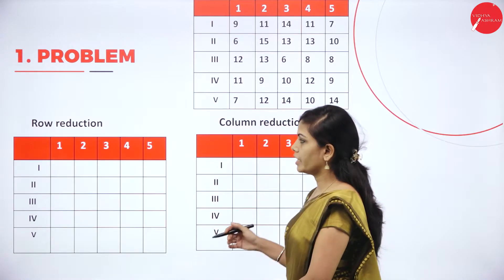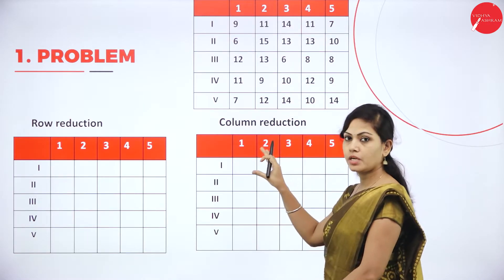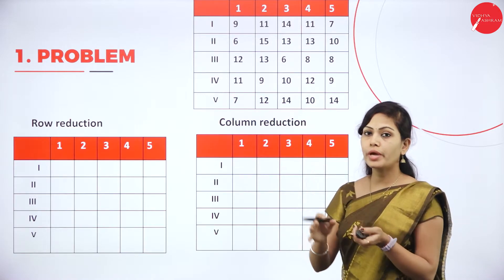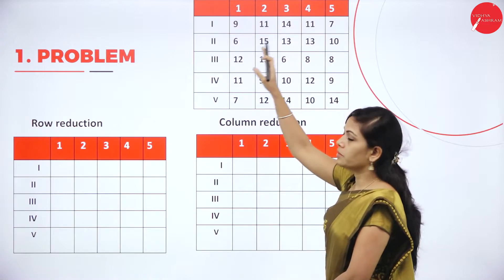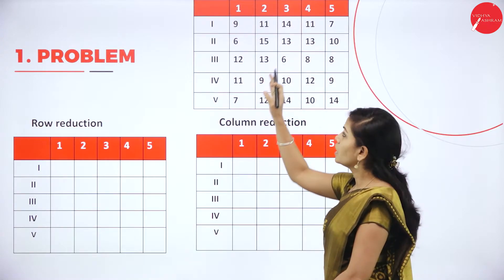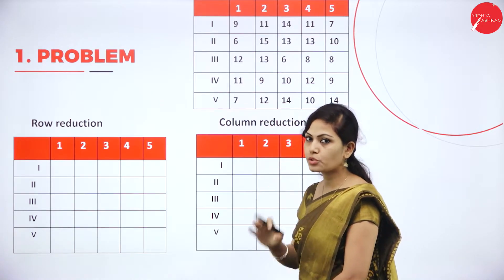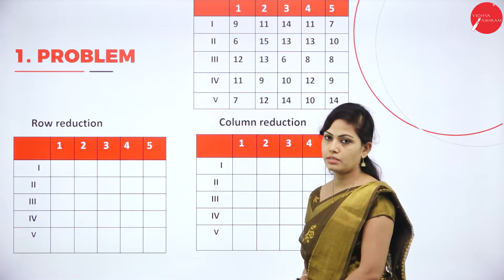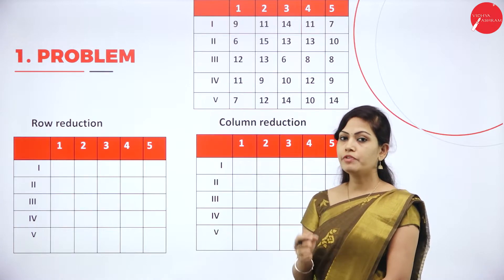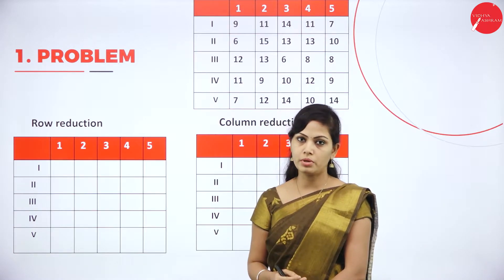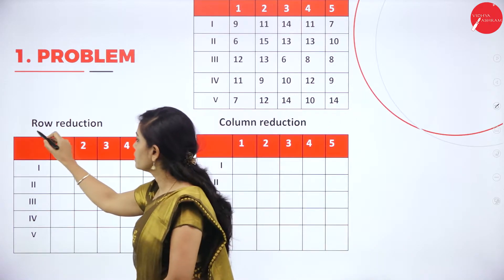Today I will discuss assignment problems using Hungarian method. So first question in Hungarian method — this is your given table. The first step is to check whether it is a square matrix or not. The number of columns should be equal to number of rows. We have five columns and five rows, so it is a square matrix and you can proceed. If it is not a square matrix, it is an unbalanced problem. Since it is a square matrix, the next step is to find the row reduction.